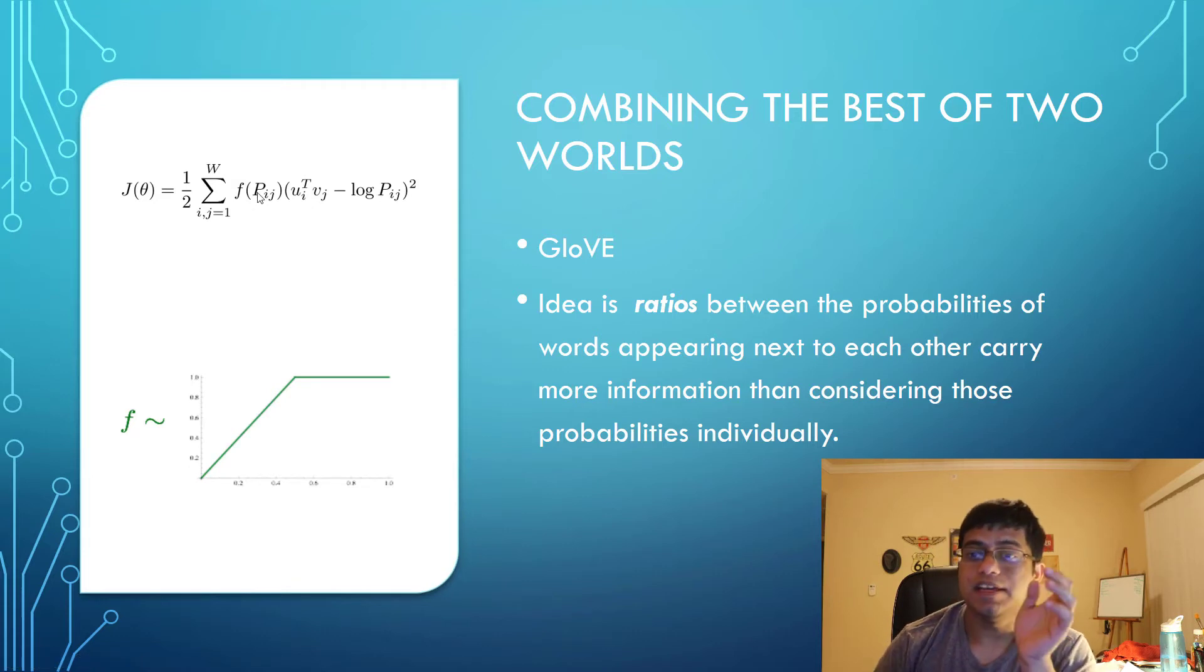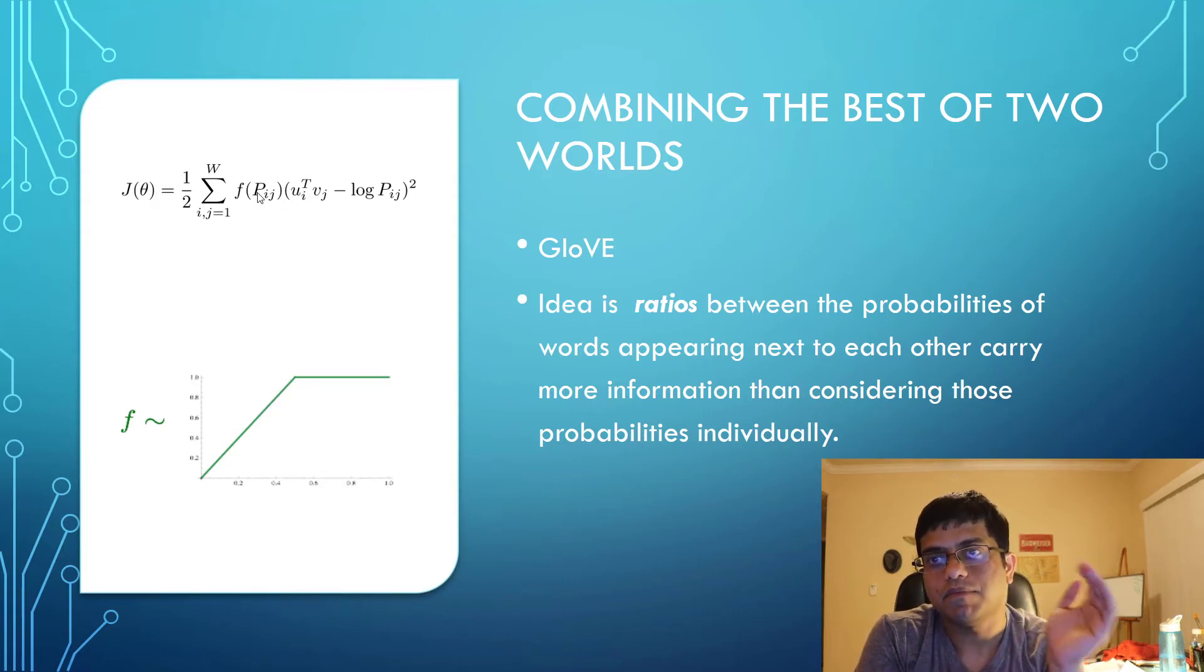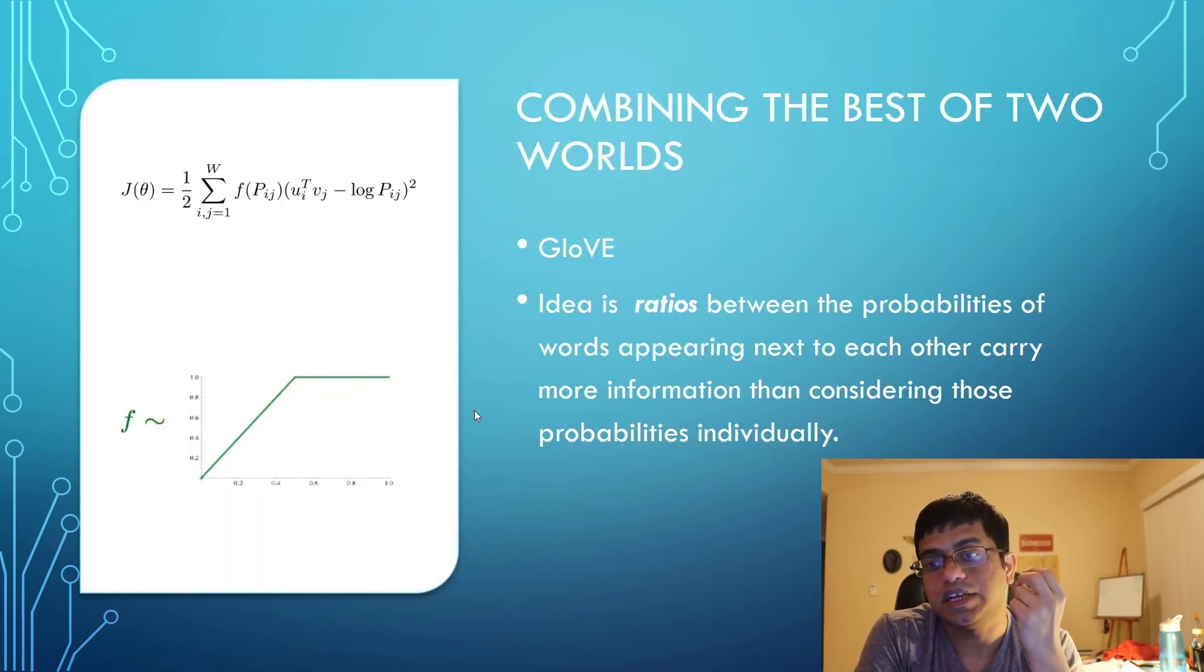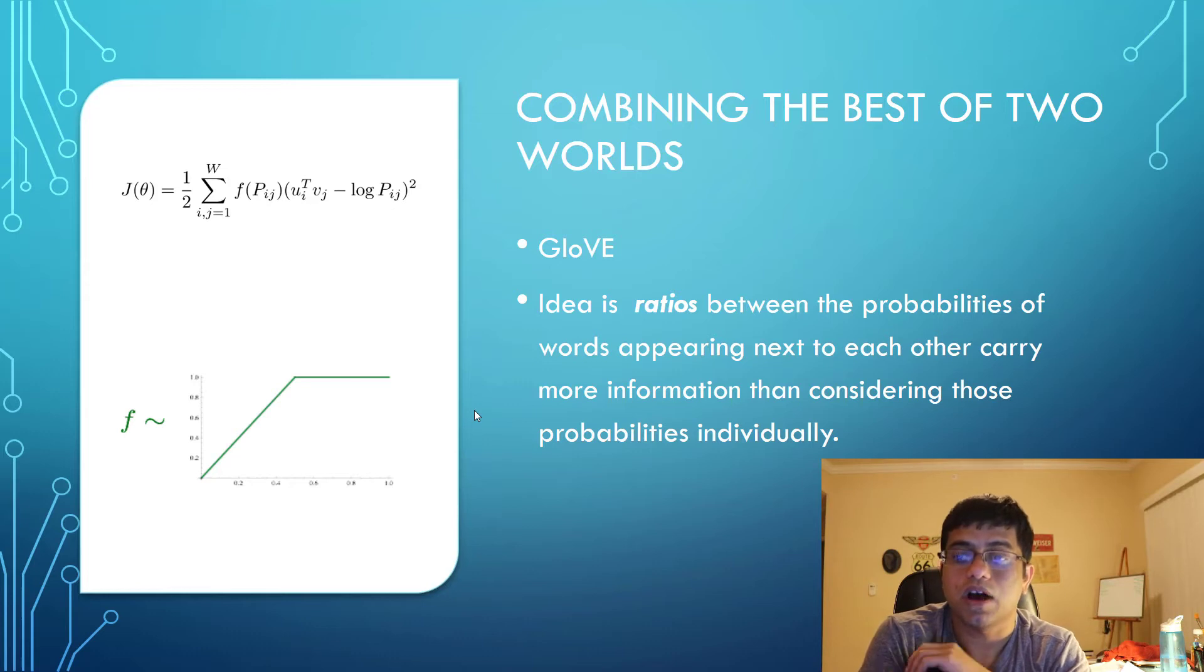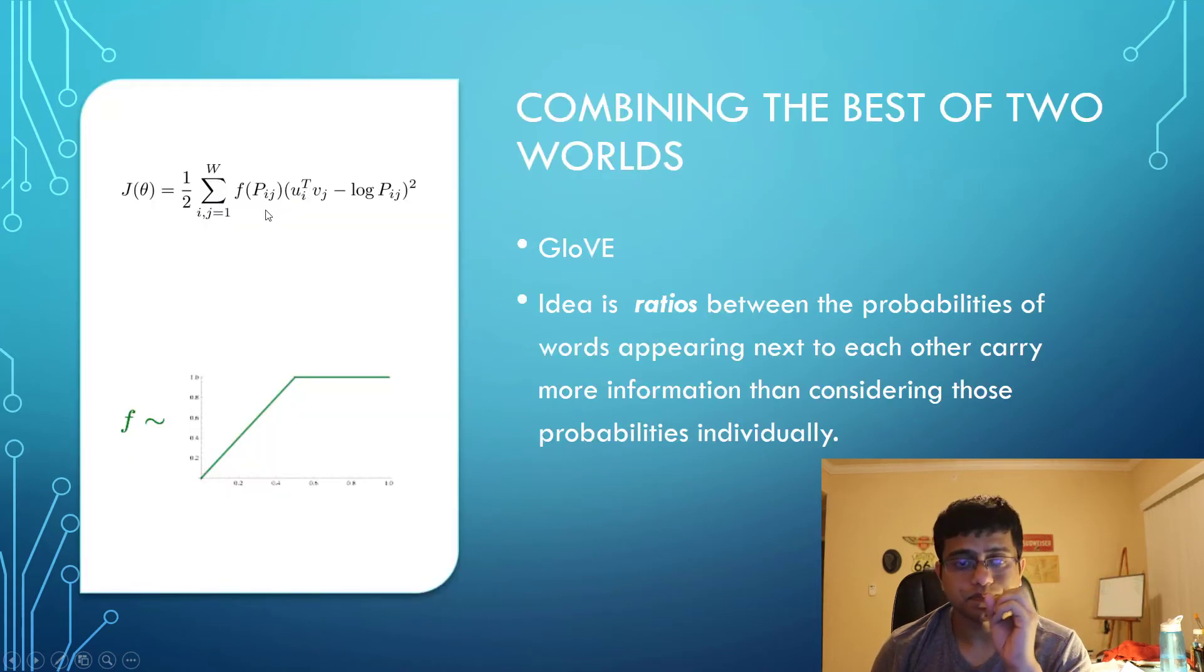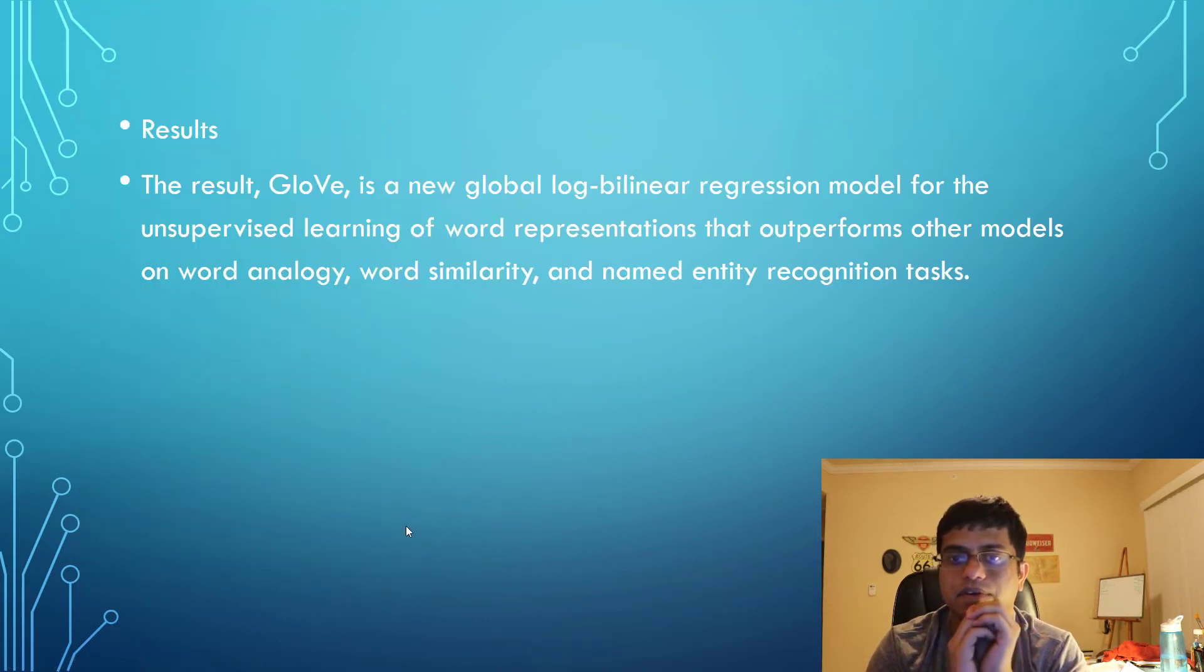What GloVe gives us: it's faster in training compared to word2vec or matrix factorization, it's scalable to huge corpora, and you get good performance even with small corpus or small vectors. We conclude that GloVe is a new global log bilinear regression model. It provides unsupervised learning of word representations and outperforms other models on tasks like word analogy, word similarity, and named entity recognition.